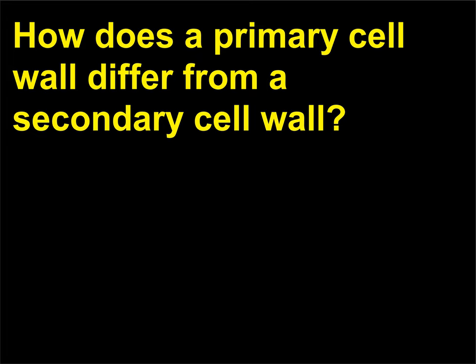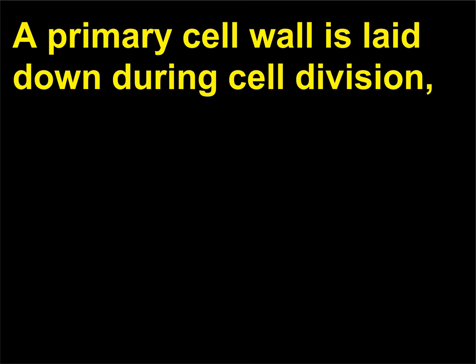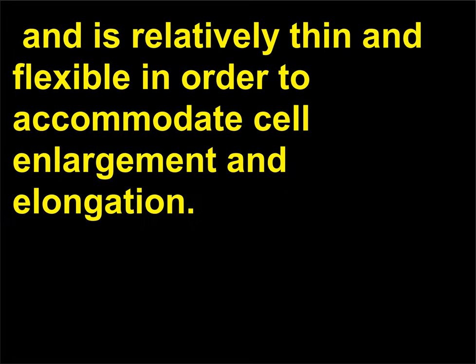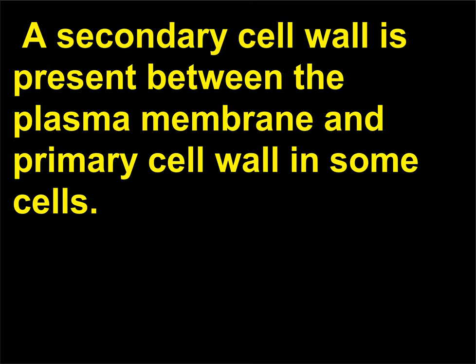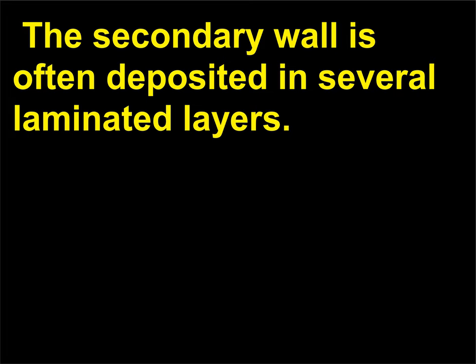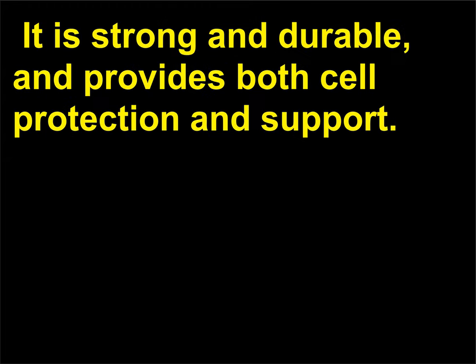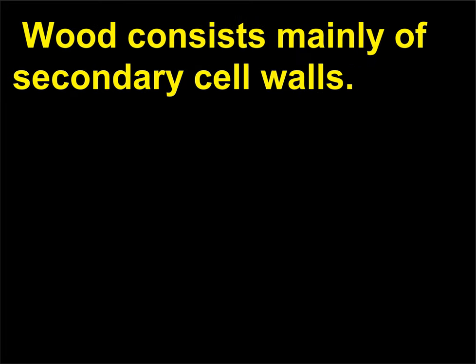How does a primary cell wall differ from a secondary cell wall? A primary cell wall is laid down during cell division, and is relatively thin and flexible in order to accommodate cell enlargement and elongation. It is strengthened when the cell matures and stops growing. A secondary cell wall is present between the plasma membrane and primary cell wall in some cells. The secondary wall is often deposited in several laminated layers. It is strong and durable, and provides both cell protection and support.